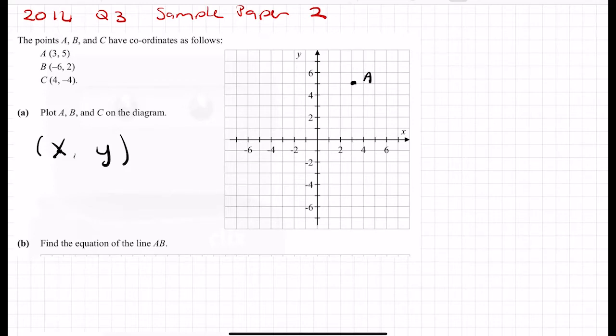Very important that you label the points, otherwise you won't get most of the marks. B is (-6,2), so x before y, so -6 on the x-axis brings me over to here, and then I have to go up to 2, so that's B. And then C is 4 on my x, down to -4 on my y, so (4,-4) is here. Let's just have a quick check: (3,5) A looks good, B (-6,2) that looks good, C (4,-4).